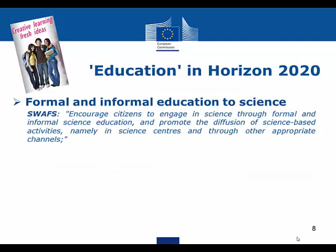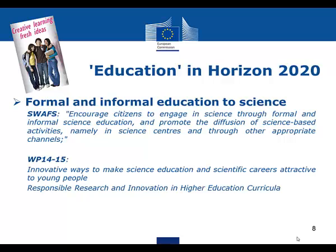As stated in the Horizon 2020 regulation, Science with and for Society is encouraging citizens to engage in science through formal and informal science education and promoting the diffusion of science-based activities, namely in science centers and through other appropriate channels. Two topics are foreseen under the work program 2014–2015: innovative ways to make science education and scientific careers attractive to young people, and responsible research and innovation in higher education curricula. Support to education can also be found in various places across the three main priorities of Horizon 2020.